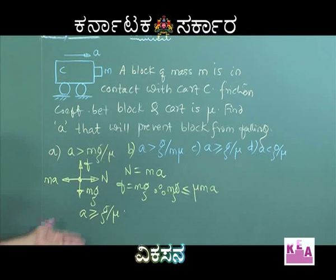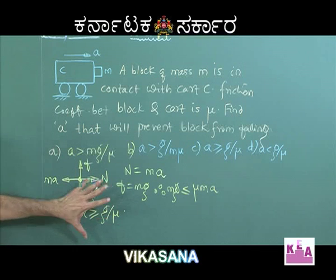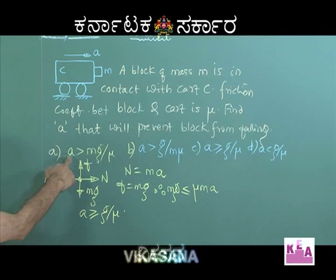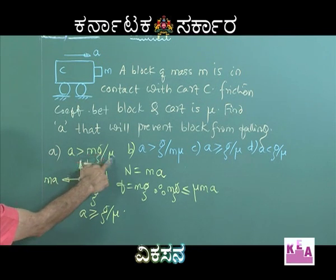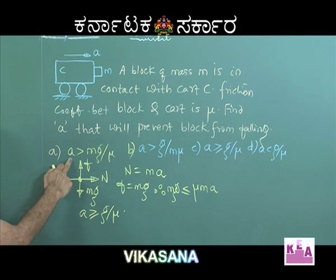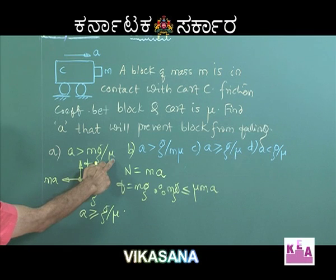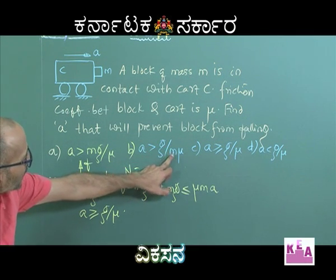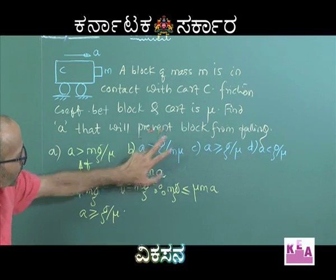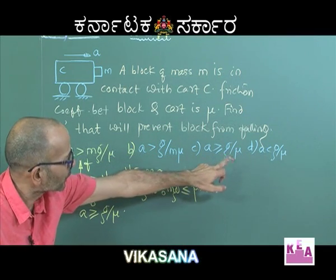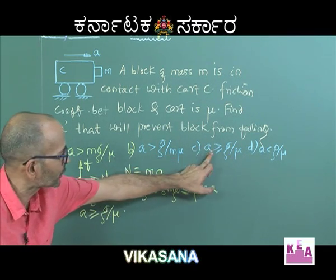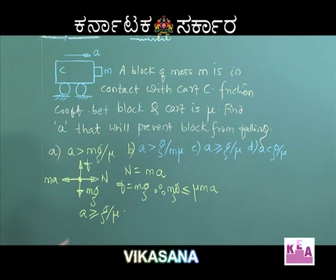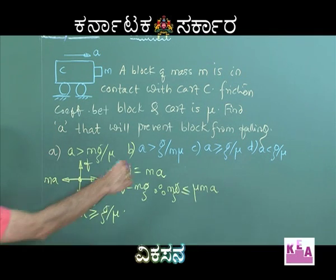This could be checked by looking at the options using dimensional analysis. The first option says A should be greater than MG by mu — this is dimensionally incorrect because you are equating acceleration to a force. Similarly, A greater than G by M-mu is also dimensionally wrong. Only the remaining two options are dimensionally correct, and solving confirms that option C is correct.